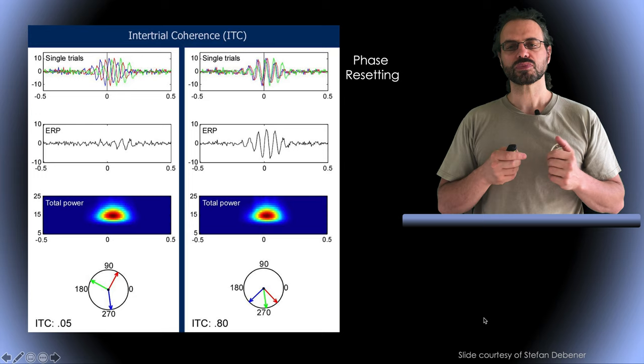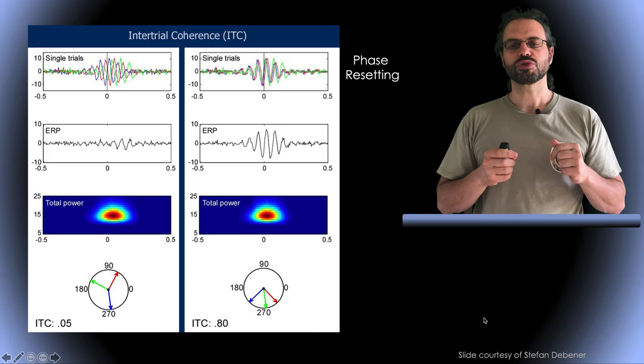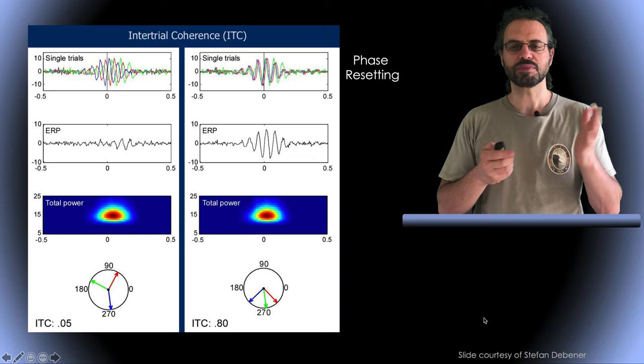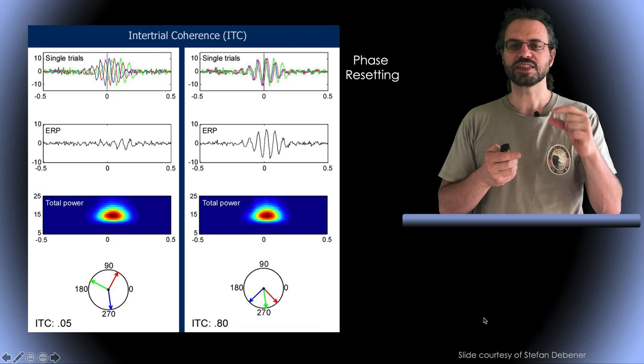Now let's go back to our first example. You can see that in the first case on the left the phases of the single trials are not aligned. In this case the phase of the vector will be random and the average of the normalized phase vector will have a small magnitude or length.